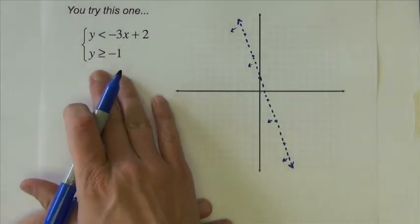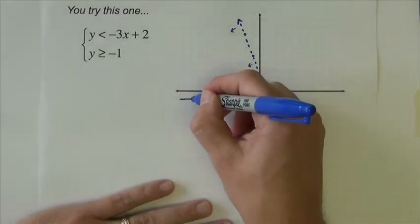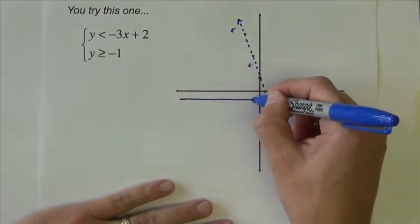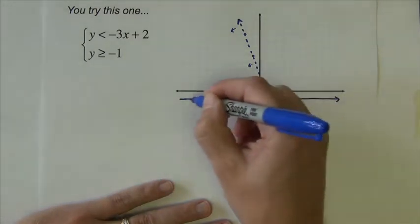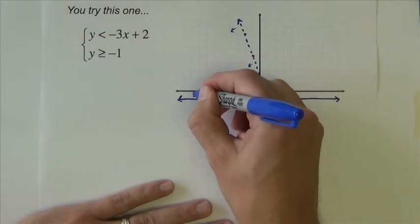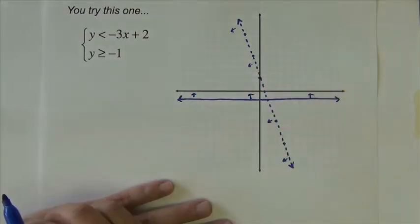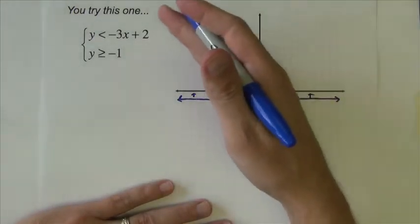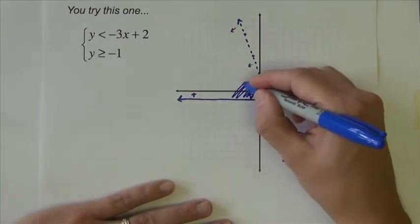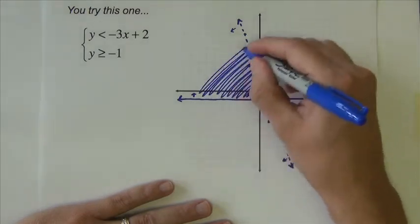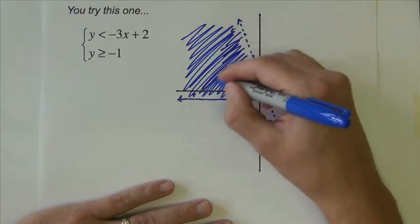I also want y is greater than or equal to negative 1. That's going to be a solid line going through negative 1 on the y-axis. Greater than shades everything up above this line. So we can see with one going down and one going up, the intersection is going to be right in between these lines, like that.